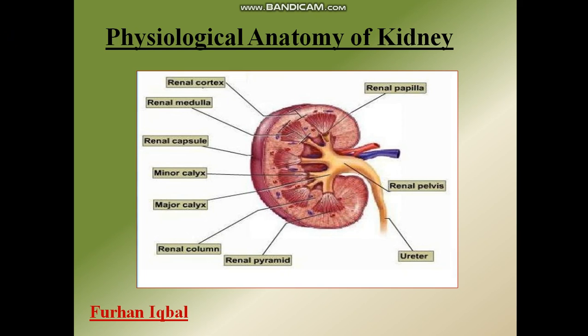Our topic of discussion is the physiological anatomy of the kidney. Although our subject is physiology, it is necessary to understand the anatomy first — with the understanding of anatomy you are able to understand the function of the kidney. Here you can see that the kidney is a bean-shaped structure; it has a depression in its center and its color is almost red, just like the red bean. This is the cross-sectional view of the kidney.